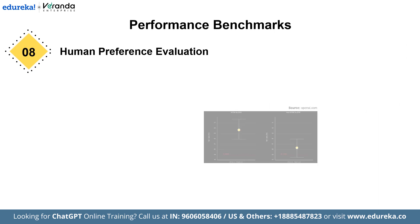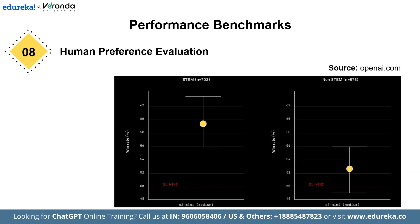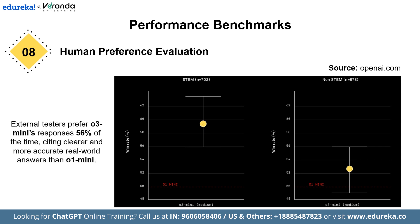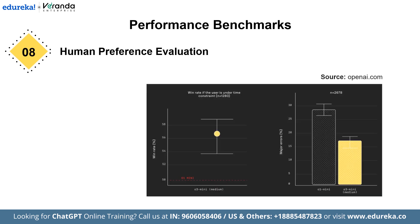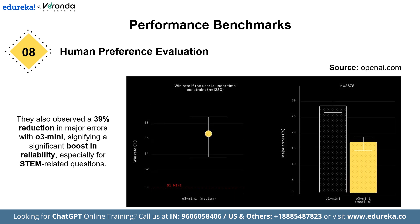Next is Human Preference Evaluation. According to external expert reviewers, O3 mini isn't just beating O1 mini on paper — it's also delivering clearer and more accurate answers in the real world. Testers preferred O3 mini's responses 56% of the time and saw a 39% reduction in major errors on tough real-world questions — a massive leap in reliability, especially for STEM-related tasks.